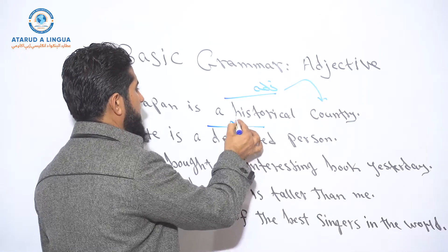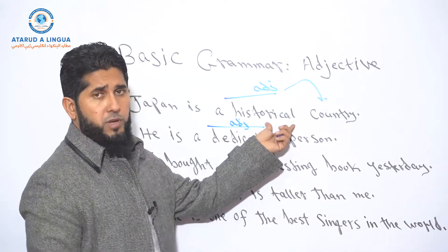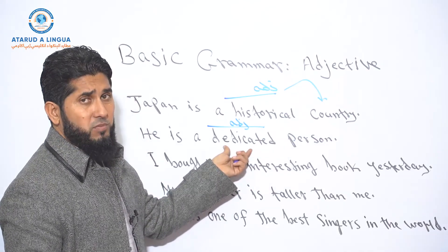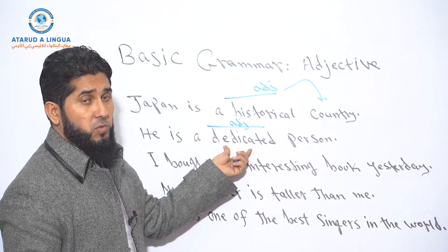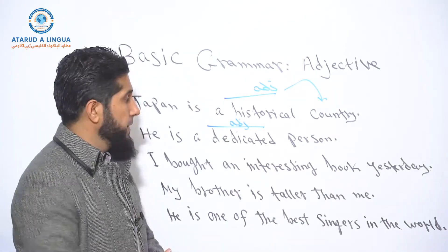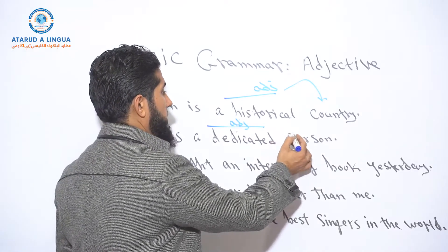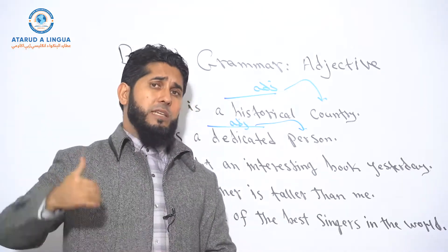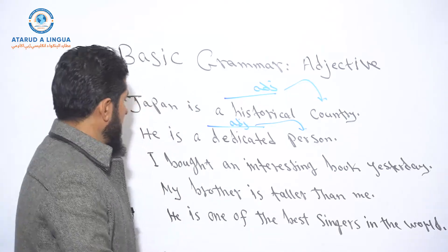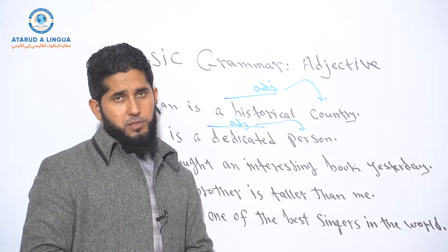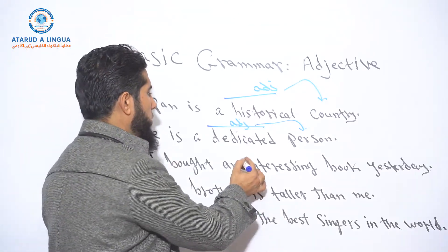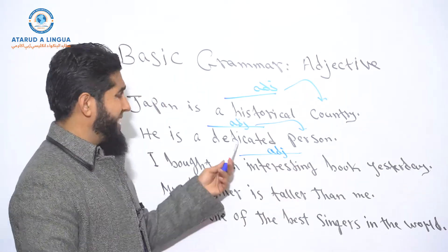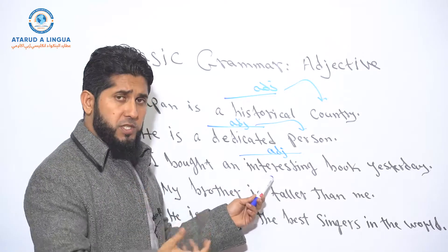The second example: 'He is a dedicated person.' The word 'dedicated' is an adjective — specifically a past participle adjective. The third form of a verb can function as an adjective if it describes a noun. It describes the noun 'person' — what kind of person is he? He is a dedicated person. The third example: 'I bought an interesting book yesterday.' 'Interesting' is a present participle adjective, while 'dedicated' is a past participle adjective.